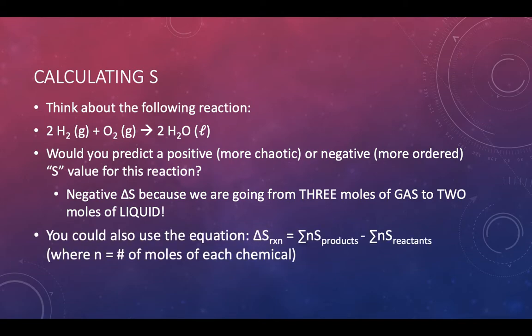What mathematical equation could you use to find the actual value for the delta S of that reaction, the change in entropy in that reaction? It's just like the delta H of reaction that you already know. You do the products minus the reactants. You do the sum of the products minus the sum of the reactants, and then that N are the moles in your balanced chemical equation.